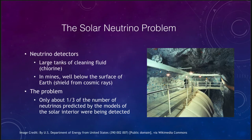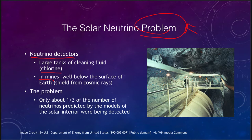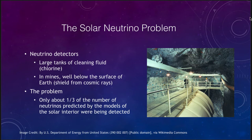This leads us to what we call the solar neutrino problem. Large tanks of cleaning fluid containing lots of chlorine were used as detectors, placed in deep mines where the surrounding earth shields from cosmic rays that could also interact with chlorine and cause false detections. The problem was that we were only detecting one-third of the predicted number of neutrinos. That was a significant difficulty — if you don't detect what your model predicts, you have to make modifications. So what could the possible solutions to the solar neutrino problem be?